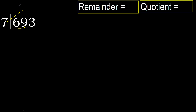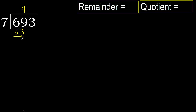7 multiplied by which number is nearest to 69 but not greater? 7 multiply by 9 is 63 — that is not greater. Subtract: 69 minus 63 equals 6.